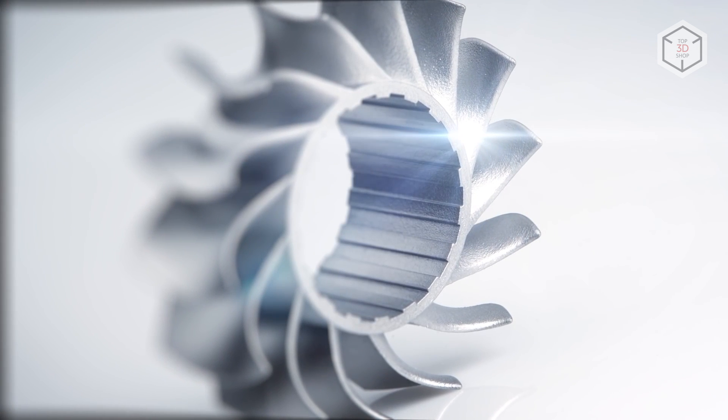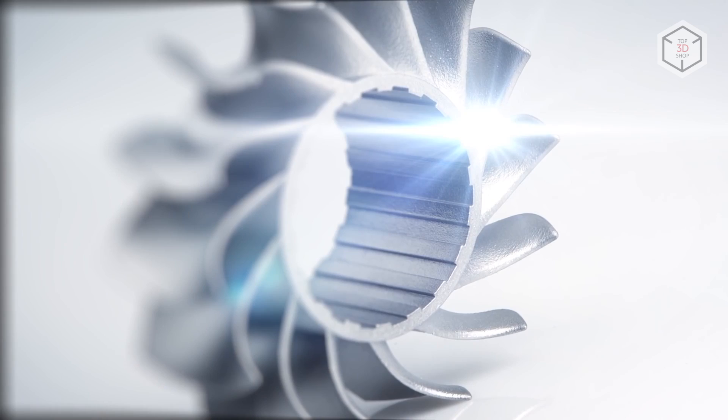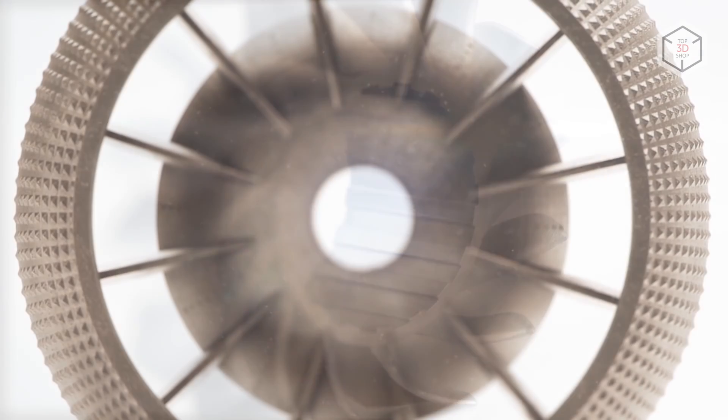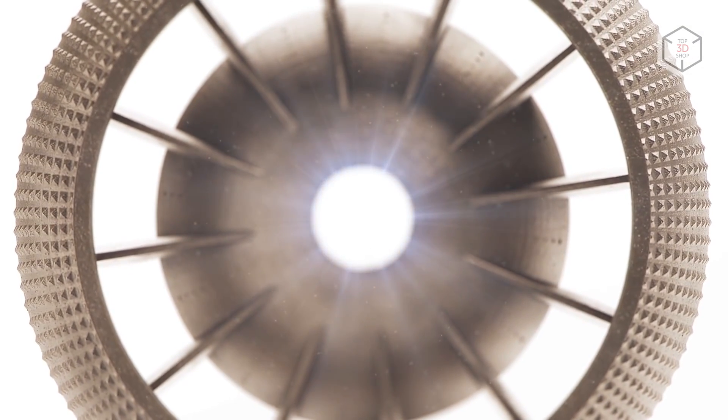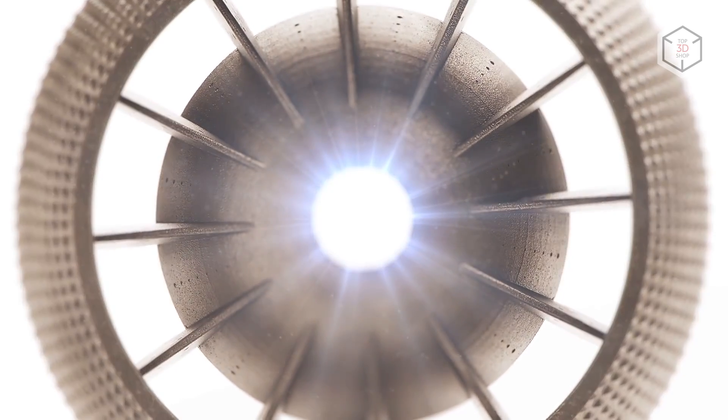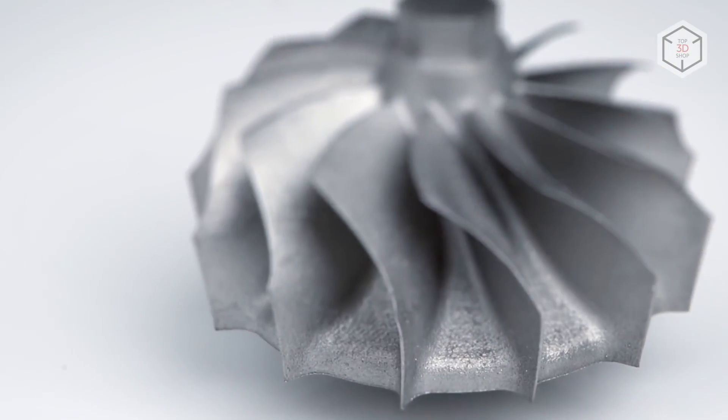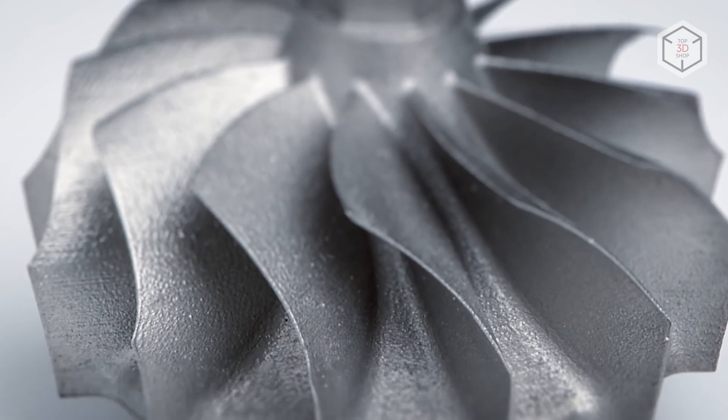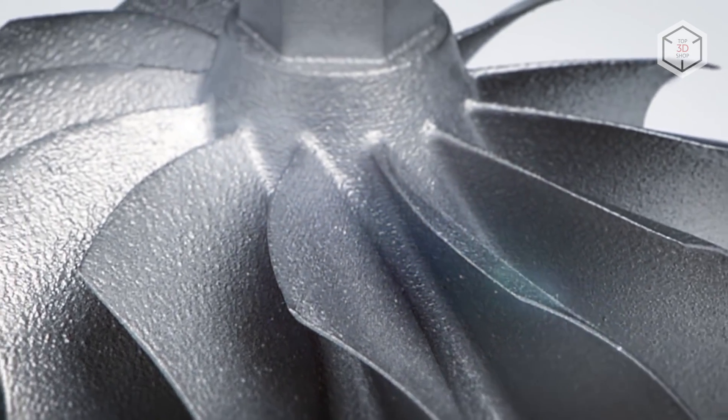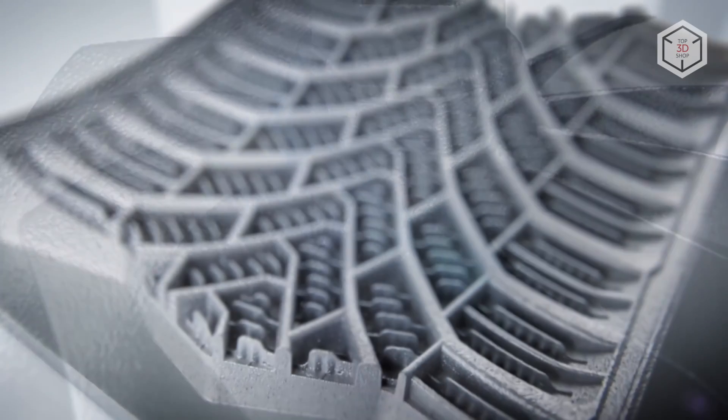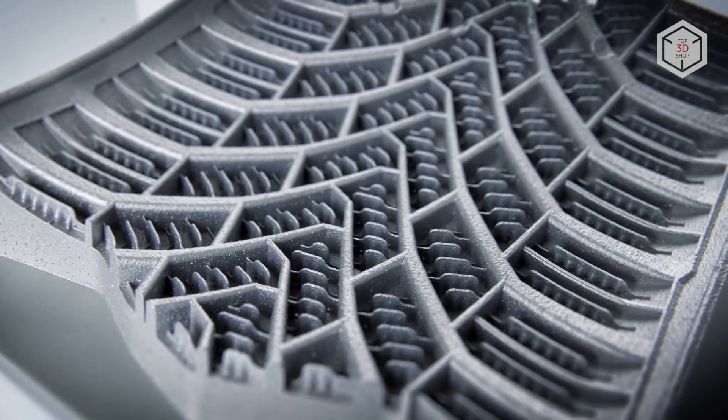As for disadvantages, SLM involves no low bar of entry. The cost of budget SLM machines is fairly high. The cost of a single part can be much higher compared to traditional production methods. Parts require post-processing, including powder and supports removal, surface grinding, etc. Maximum dimensions of SLM printed parts do not exceed 1 meter. High power lasers consume large amounts of electricity.